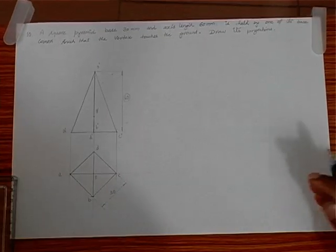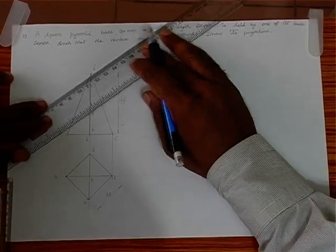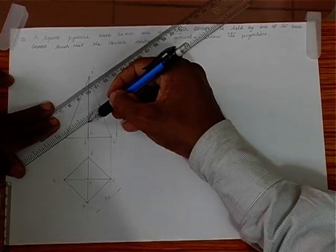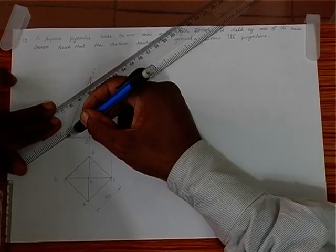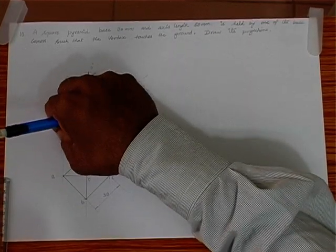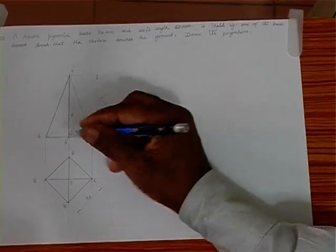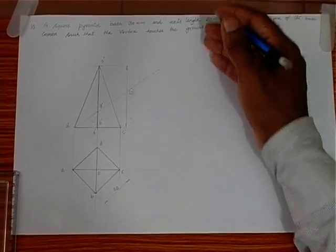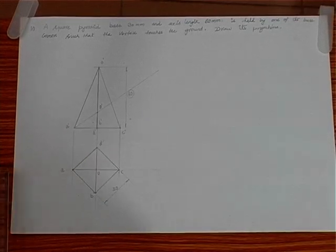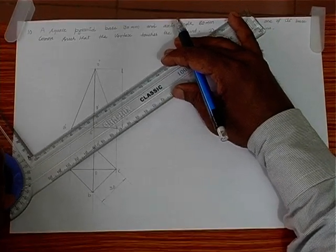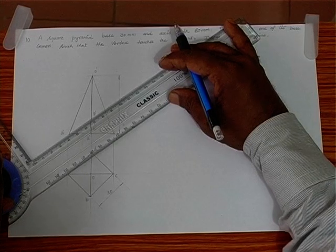So we take 50 mm height and we locate the center of gravity, marking it as G dash. Then we take one corner and join that corner with the center of gravity by a reference line. So normally when we hold this with the help of this corner, we find the line joining the corner and the center of gravity. The center of gravity should be strictly vertical. For that matter, we just have to find out the triangle connecting points A' and G'.